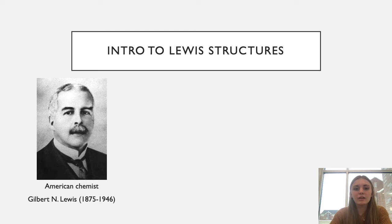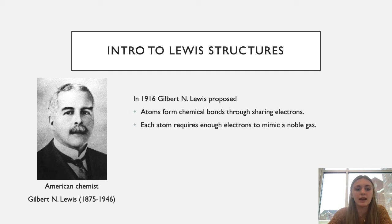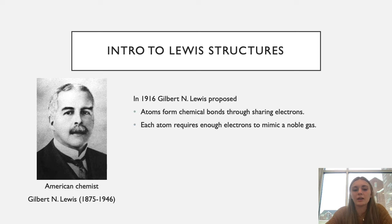As a little introduction, we're going to talk about Gilbert N. Lewis, an American chemist who lived from 1875 to 1946. While studying in 1916, he proposed two different ideas: that atoms form chemical bonds through sharing electrons — in other words, covalent bonds — and that each atom requires enough electrons to mimic a noble gas.